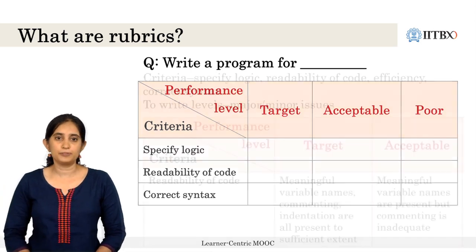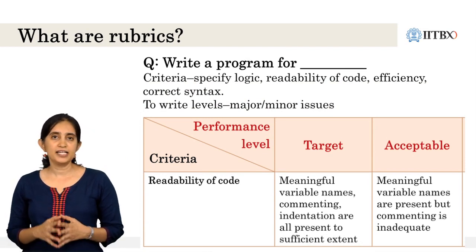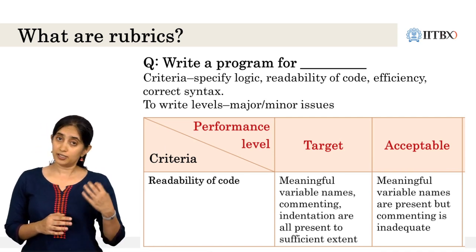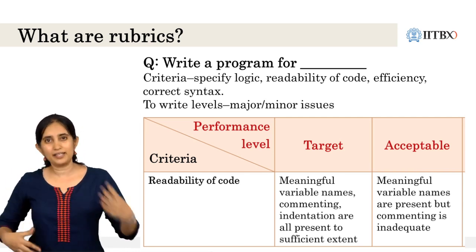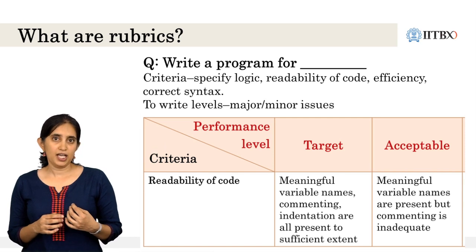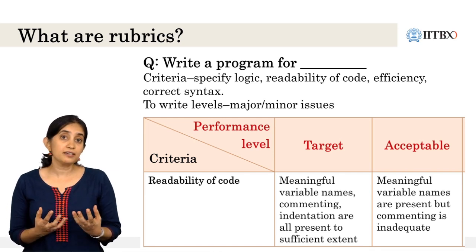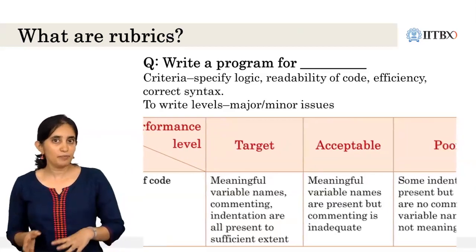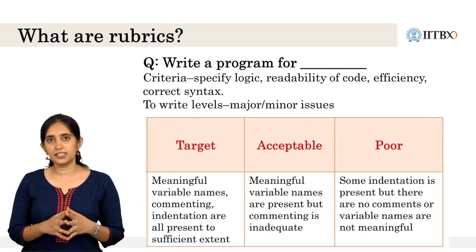If we take the criterion of readability of code, a target performance can be that meaningful variable names are assigned, the learner has commented on the various program lines, and there is indentation to maintain readability. If a practice such as commenting of the lines is not done, perhaps some might consider it a smaller error and look for whether the variable names are meaningfully assigned. So a learner who writes meaningful variable names but forgets to comment would be given a score of acceptable. And if none of this is done and all the issues are missing, then the score would be poor.